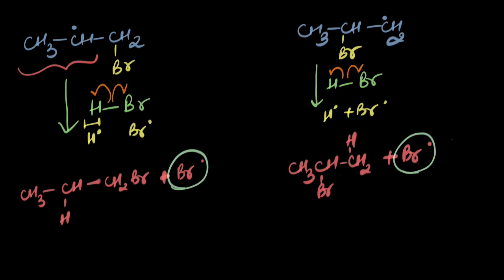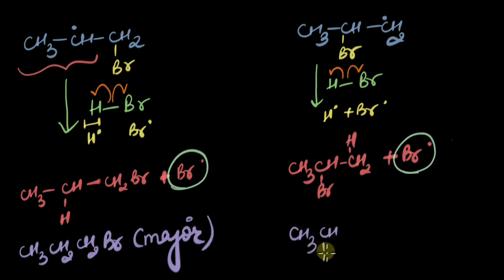The major product would be the one that comes from the more stable free radical. And the major product in this case would be CH3-CH2-CH2Br. While CH3-CHBr-CH3 would be the minor product.